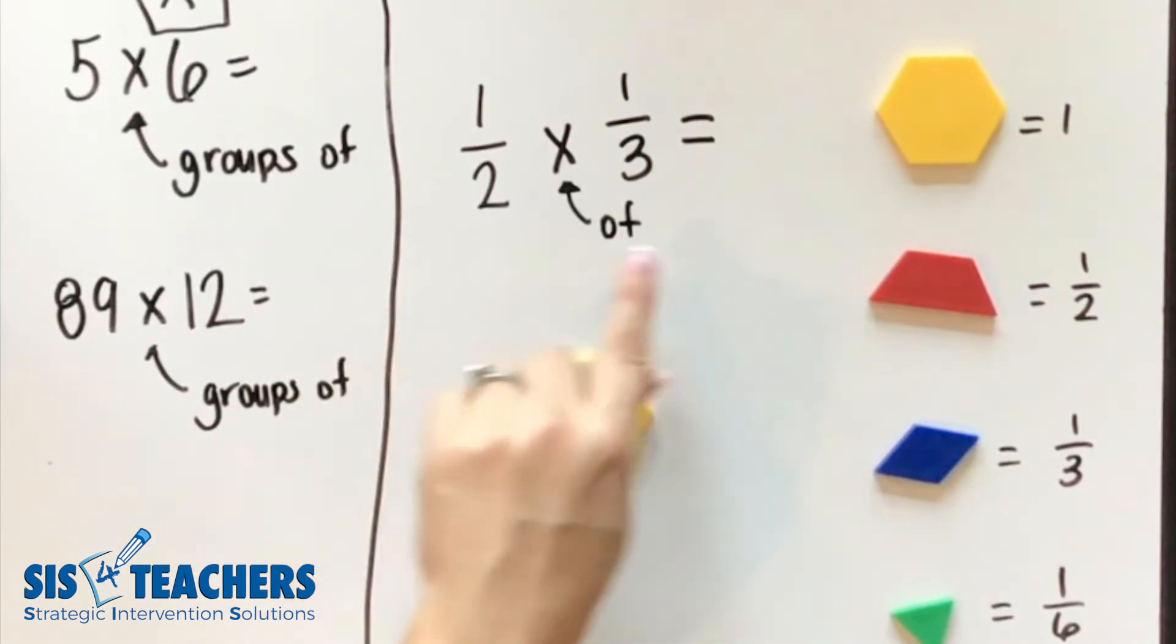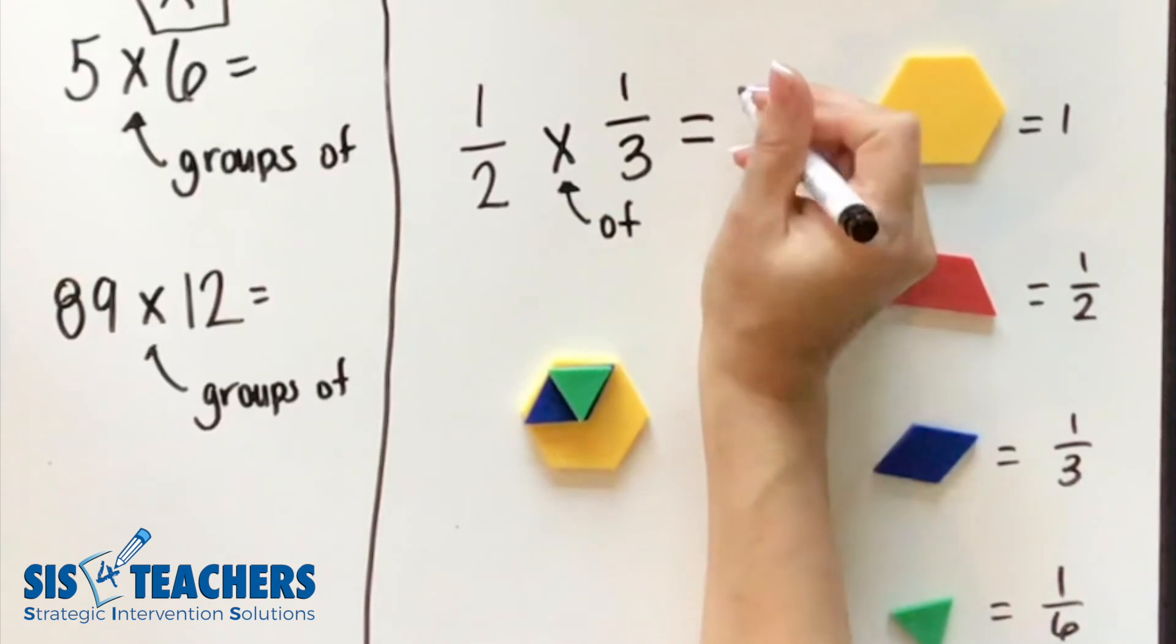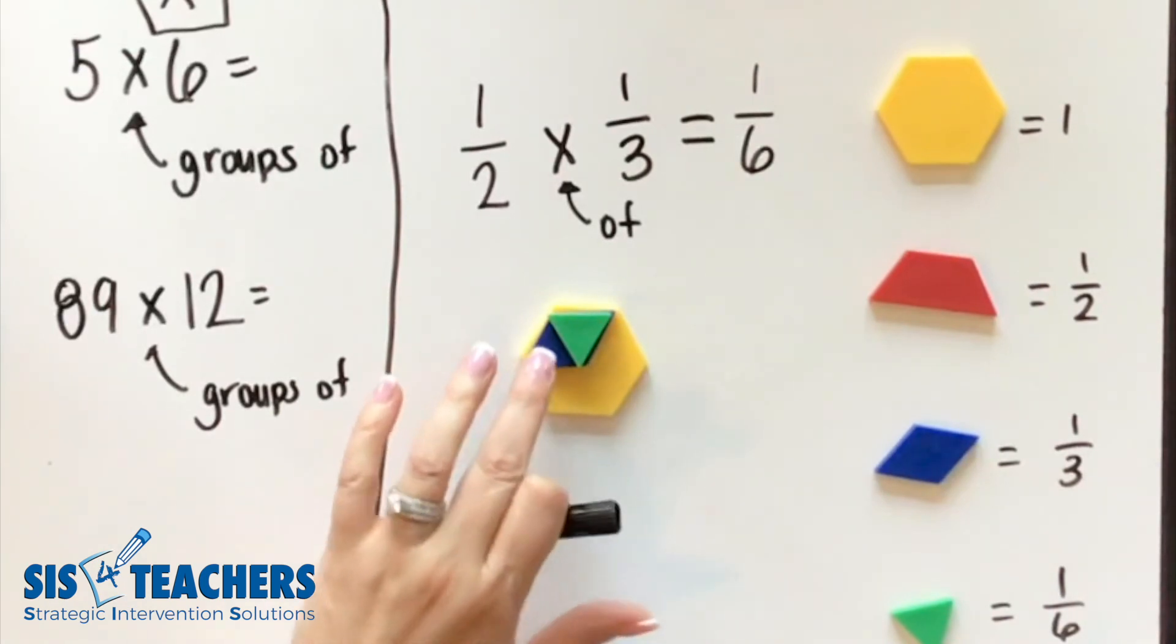Because remember, we're not even talking about whole numbers. We're talking about part of our whole. And so in this case, we can show this model that this equals one sixth. We would want you to show this model to demonstrate that you are showing one half of one third.